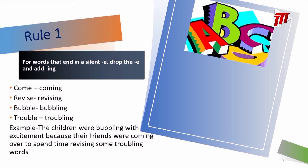When adding ING to words, there are three basic rules that we follow. We will begin by looking at rule one. Rule one: for words that end in a silent E, we drop the E and then add ING. For example, 'come' becomes 'coming.' C-O-M-E — we drop the E and we add ING to give C-O-M-I-N-G.